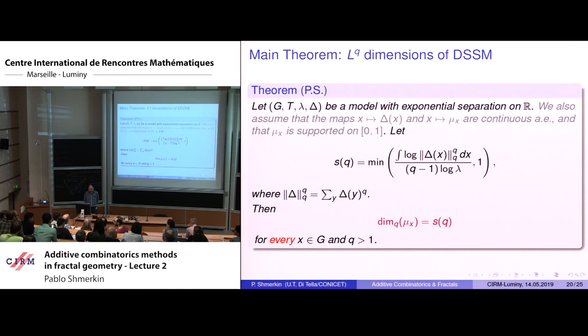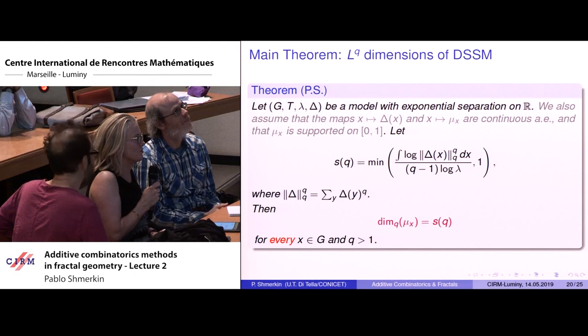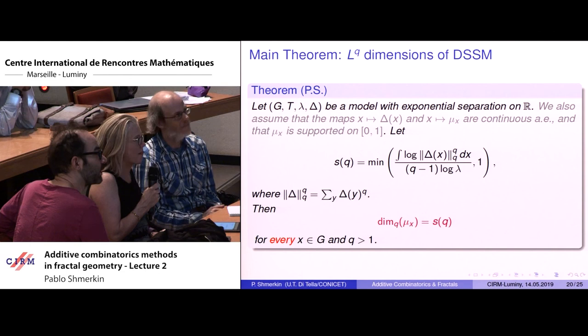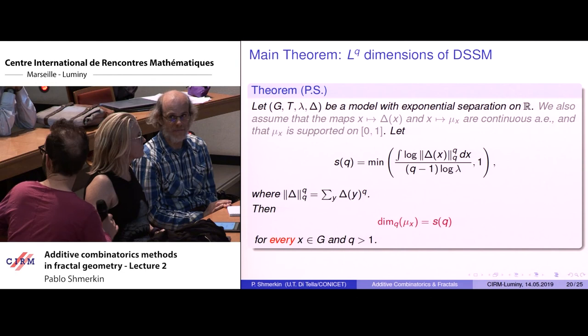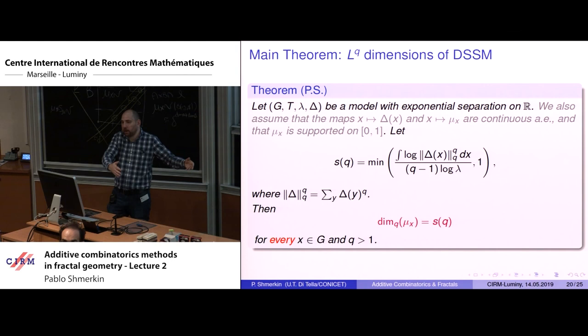Q: Does this only work for delta being an atomic measure? A: The hardest case is when it is atomic. If delta is already a smoother measure, you expect a smoother result in the end. I haven't thought about whether this concretely works for more general delta, but I would expect it in some sense. The rougher delta is, the rougher the final measure will be — so the atomic case is sort of the hardest.